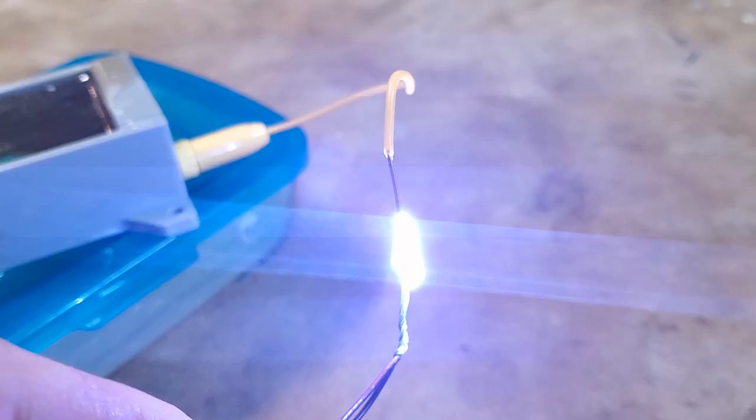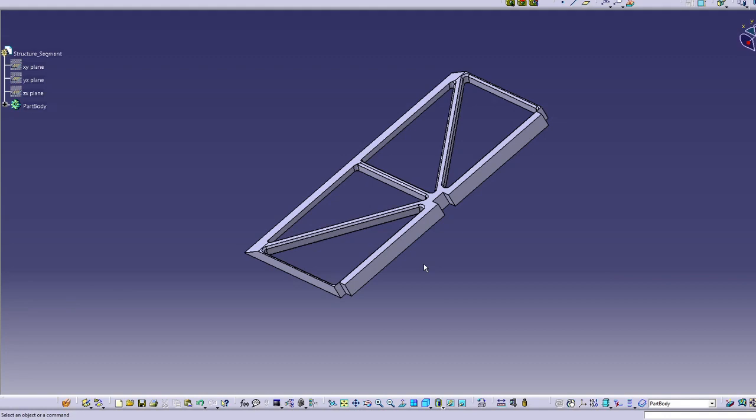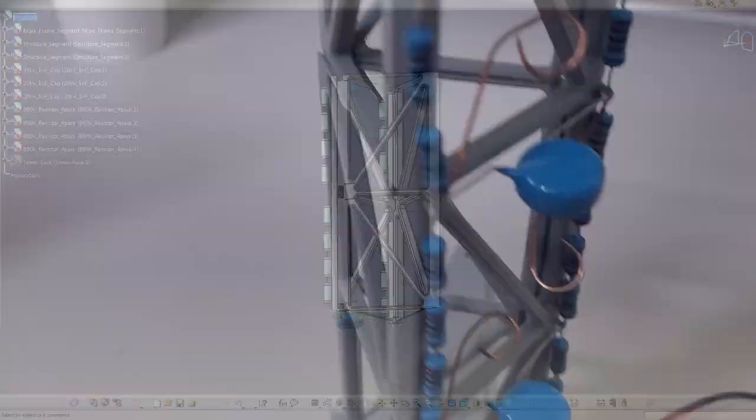The next task was to build the Marx generator circuit itself. Because of the high voltages produced, it's a good idea for circuits like these to be vertical so that the point where the voltage is highest is farthest from the ground. This required me to build a small tower which consisted of lightweight truss segments that were 3D printed, and the whole thing ended up looking a lot like a miniature cell phone tower.